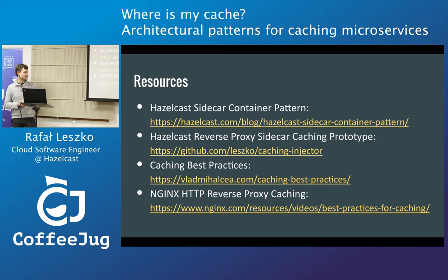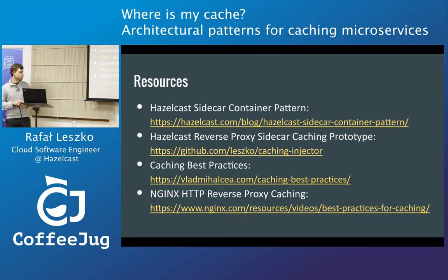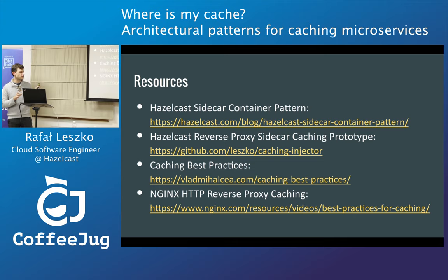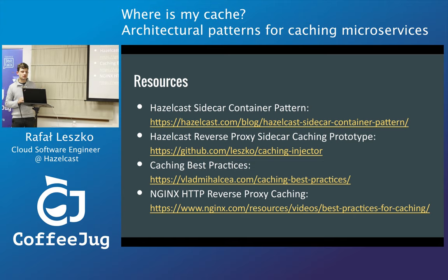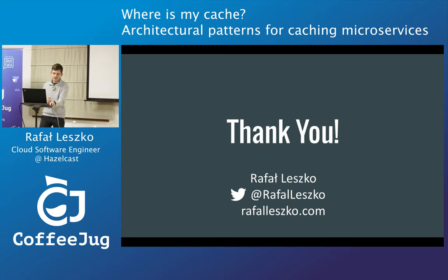As the last slide, I propose a few resources. The first one is our blog post about how to set up Hazelcast as a sidecar caching. The second one is this reverse proxy sidecar caching prototype from us. The third one is caching best practices — a very good blog post about caching in general. And the last one is a very good video talk about Nginx as a reverse proxy caching, how to set it up, and what the good and bad sides are. Thank you, it was a pleasure to be here.